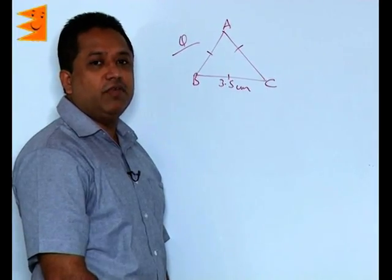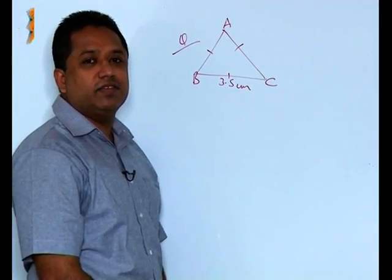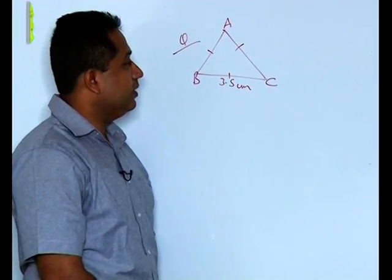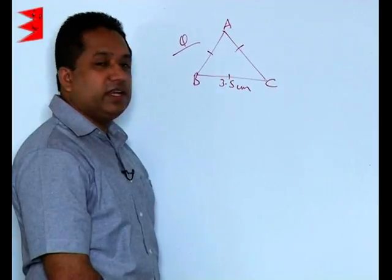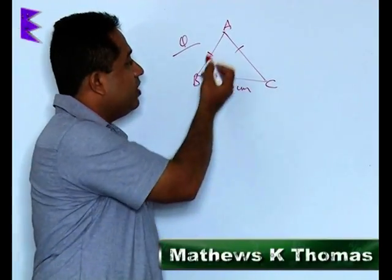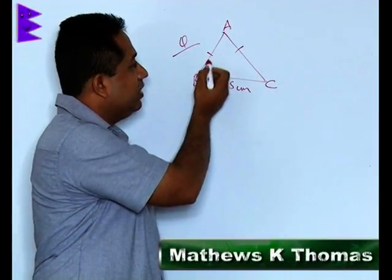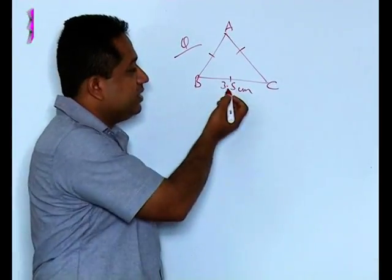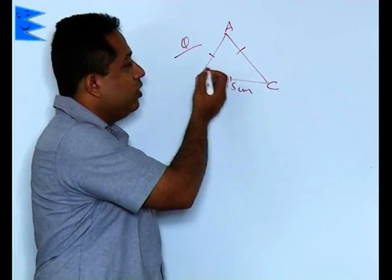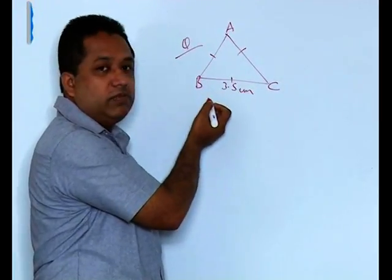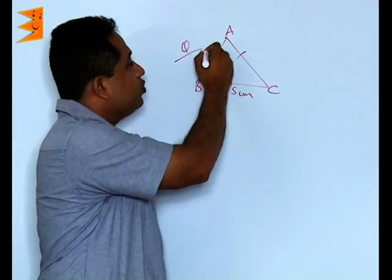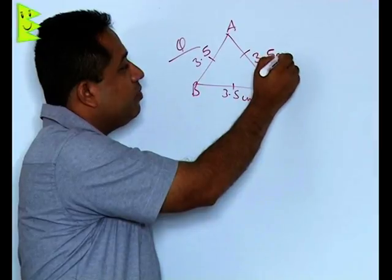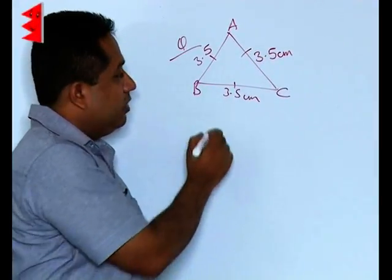In this question, the side of an equilateral triangle is given as 3.5 and we have to find out its perimeter. It is an equilateral triangle, which indicates that all the sides are equal. So if ABC is a triangle, it implies that AB, BC, and CA are equal to each other. Since one side is given as 3.5, AB will also be 3.5 centimeters and AC will also be 3.5 centimeters.